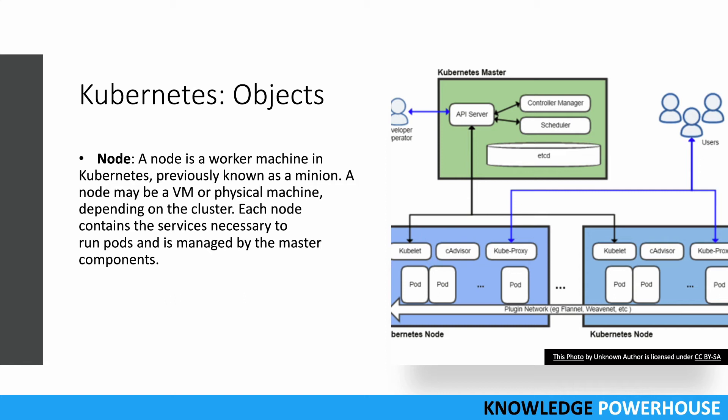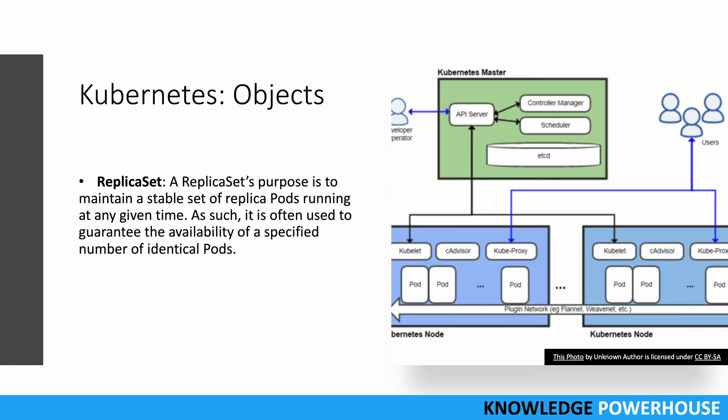A replica set maintains a stable set of replica pods running at any given time. It guarantees that a specified number of pods will be available to run. The purpose is that we have replicated our pods across multiple nodes.